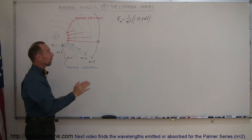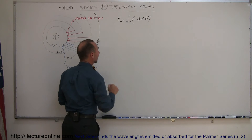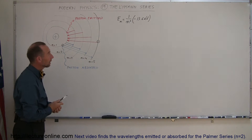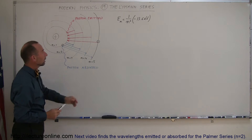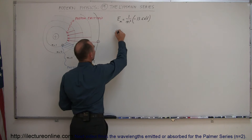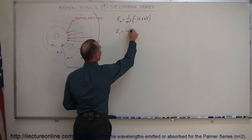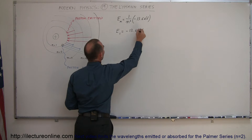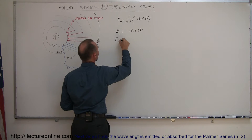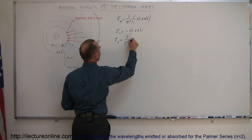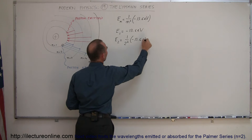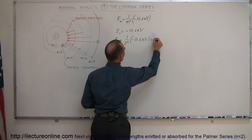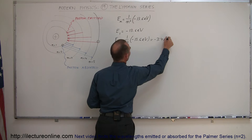Using our equation for calculating the energy level for any level, we're going to figure out what the energy levels are for n equals 1 through n equals 5. For n equals 1, that's simply equal to minus 13.6 electron volts. For energy level 2, that's equal to 1 over 2 squared times minus 13.6 electron volts, which equals minus 3.4 electron volts.